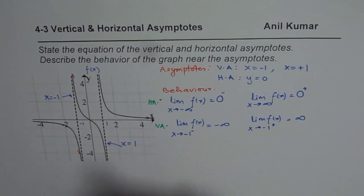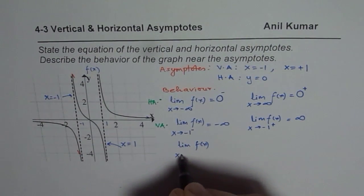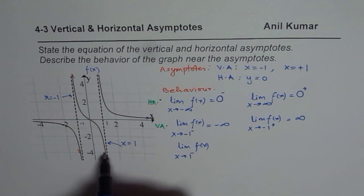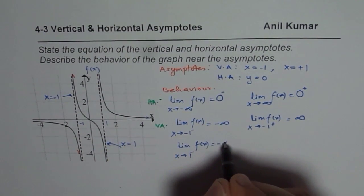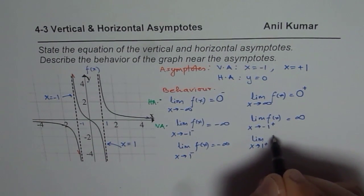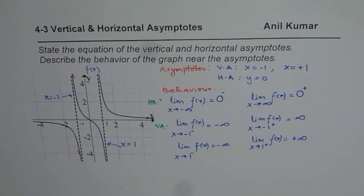Now let us consider the second vertical asymptote. The limit of the function as x approaches plus one from the left side is negative infinity. And the limit of the function as x approaches one from the positive side is positive infinity. That is how you can write down or describe the behavior of the function.